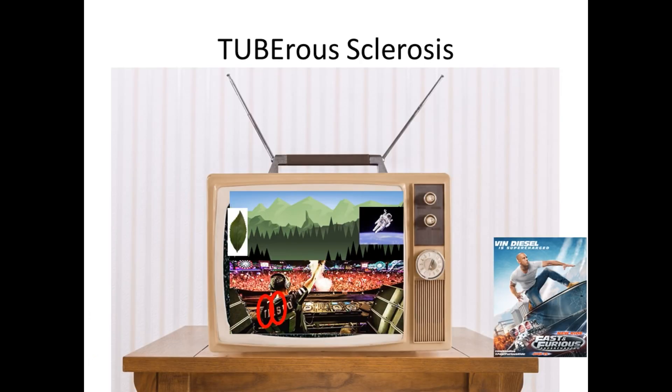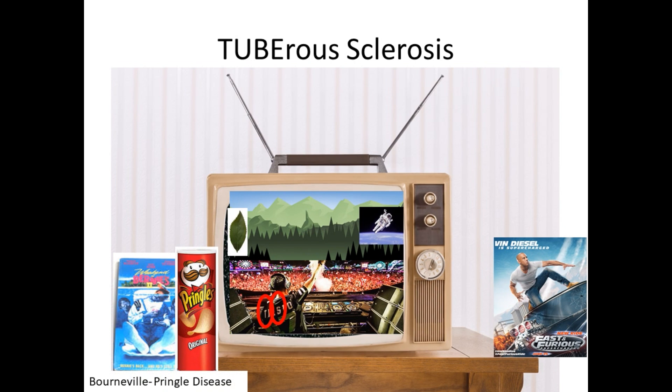The fourth phacomatosis is tuberous sclerosis — you can think of watching the tube. Here is DJ Tiësto for tuberous sclerosis, having a concert outdoors with trees in the background. Tuberous sclerosis is also known as Bourneville-Pringle disease, so it's shown next to Pringles and a video of Weekend at Bernie's.